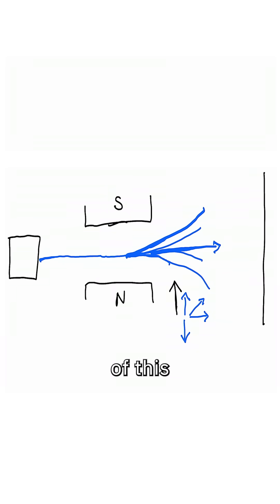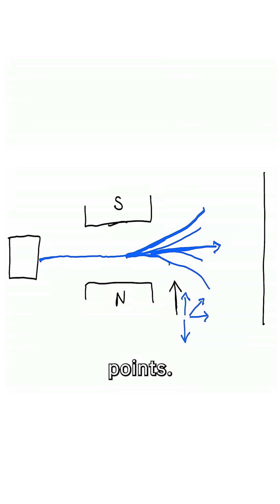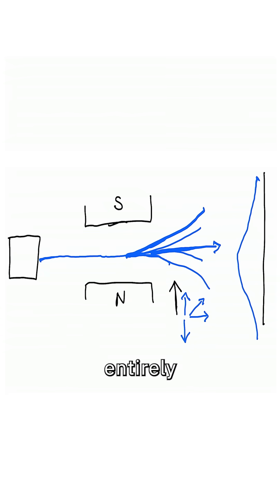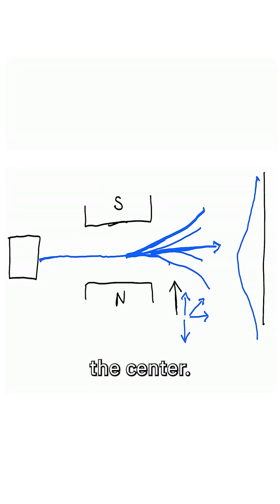Because of this range of possible forces, the atoms should all hit the screen at different vertical points, and the pattern they'd make on the screen would look something like this. But that's not at all what Stern and Gerlach saw. Instead, they saw two entirely separate blobs of atoms on the screen, with no atoms in the center.